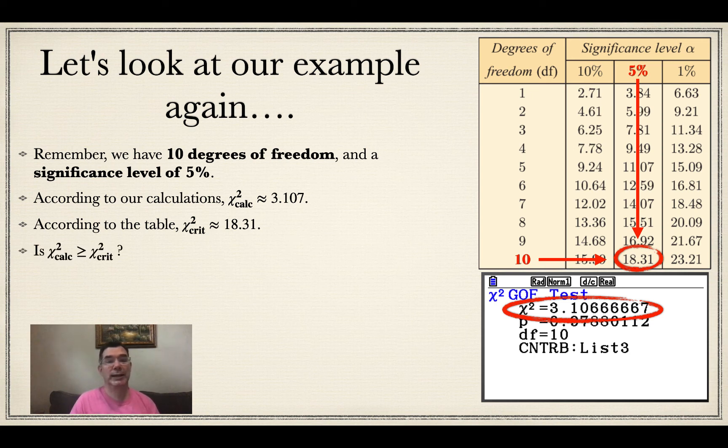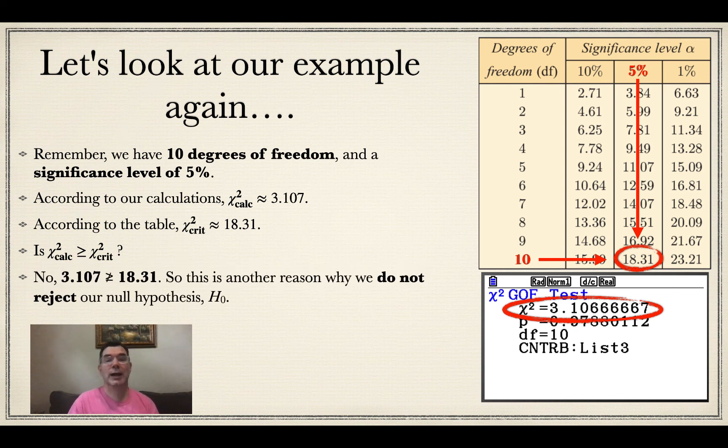So is my calculated chi-squared greater than or equal to my critical chi-squared calculation? And the answer to that is no. 3.107 is not greater than or equal to 18.31. So I just have another reason why I'm not going to reject my null hypothesis and I am going to accept my null hypothesis.